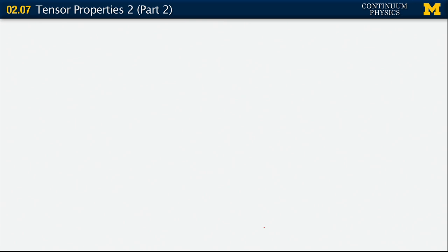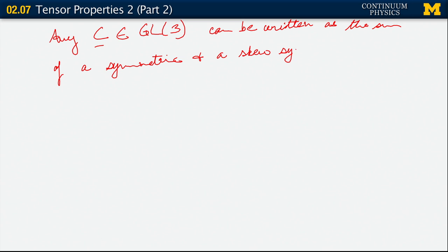One great use of this representation of symmetric and skew symmetric tensors is the following. So any tensor C, if C is another member of the space of tensors, the space GL(3), any tensor C can be written as the sum of a symmetric and a skew symmetric tensor.